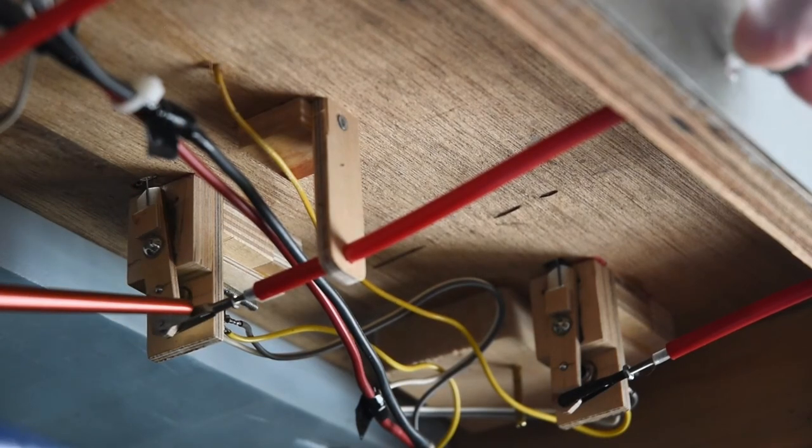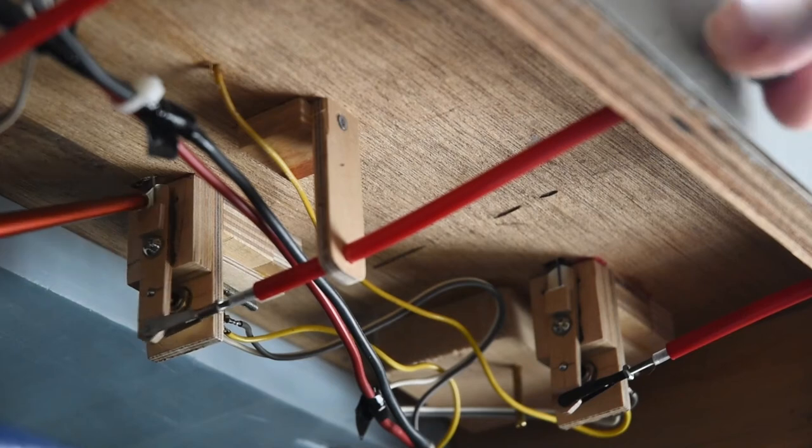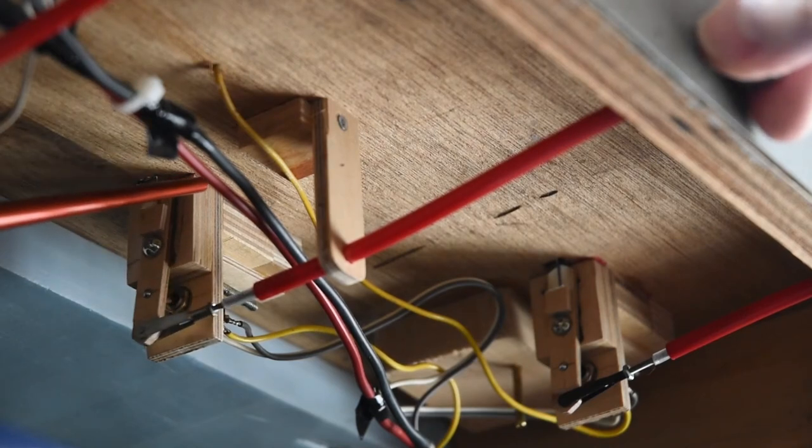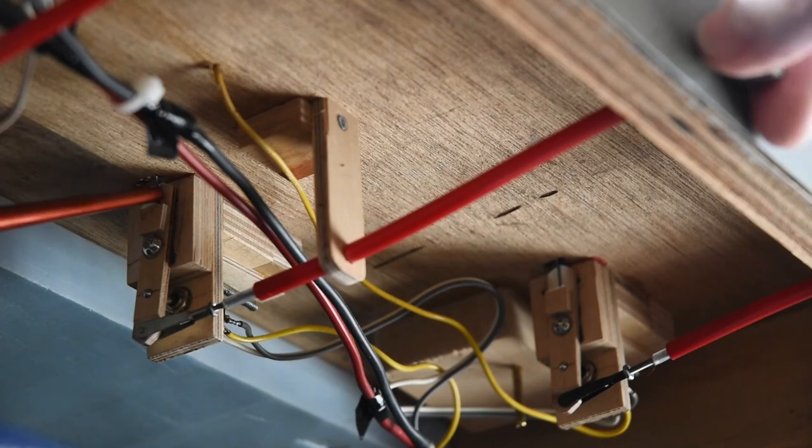So you can adjust this clevis here to fine-tune it, but even if it does overthrow, the music wire flexes, right? And you get a nice tight connection from the point to the common rail.